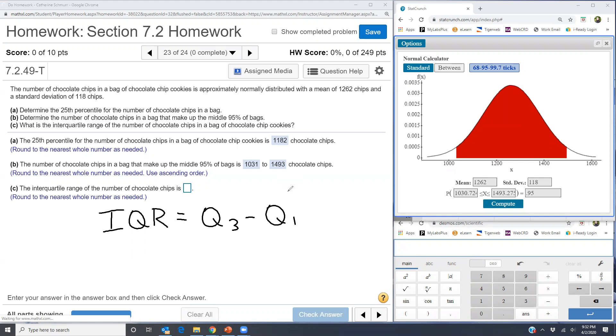And so what we would do is we would find Q3. This is going to be the x value with 75% to the left. So it's like three quarters, 75 cents. And Q1 is the x value with 25% of the data to the left.